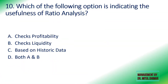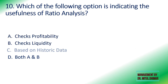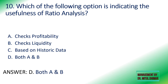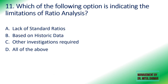Tenth: which option indicates the usefulness of ratio analysis — checks profitability, checks liquidity, based on historic data, or both A and B? We need to identify which options are positive for ratio analysis. The answer is both A and B. Based on historic data is actually a negative point, so A and B are correct.